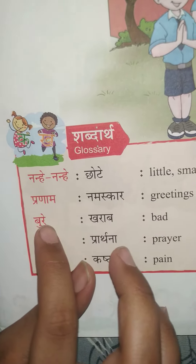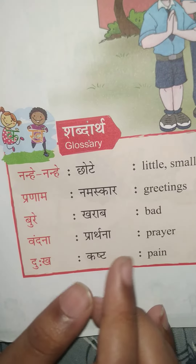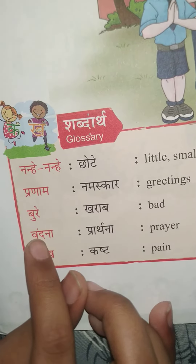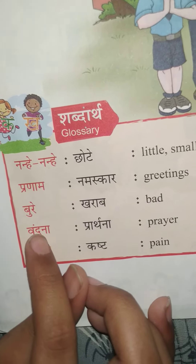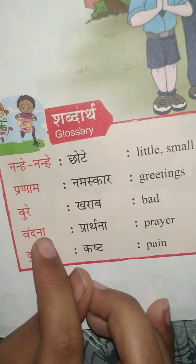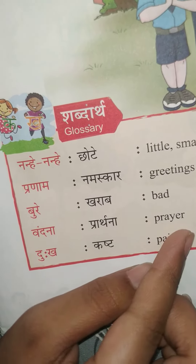Buhle, buhle — that means bad. And vandana — means prayer.